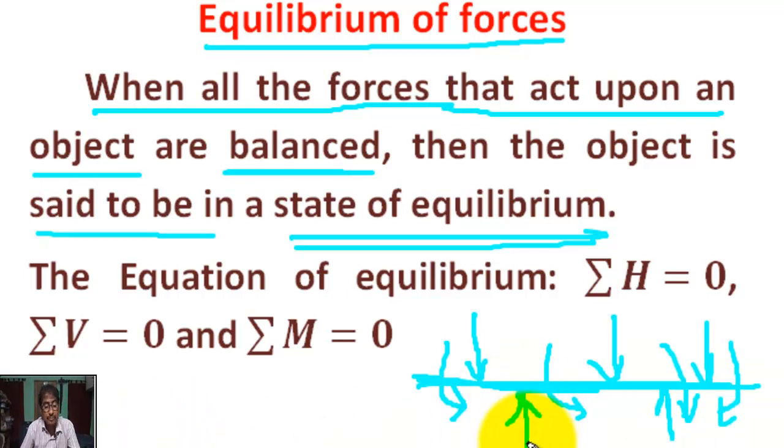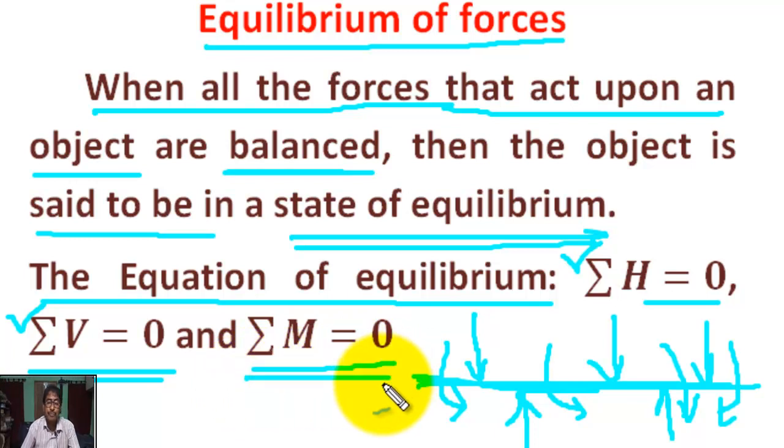Forces are considered to be balanced if the rightward forces are balanced by the leftward forces, and upward forces are balanced by the downward forces. This is called equilibrium of forces. The equation of equilibrium: sum of horizontal forces equals 0, sum of vertical forces equals 0, and sum of moments equals 0.